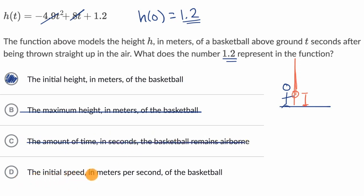And then the initial speed, well, once again, no, this is h of zero, which is the height above the ground. So we like choice A.